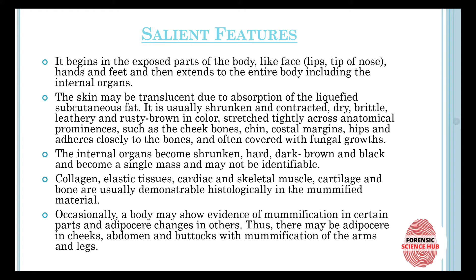Mummification begins in the exposed parts of the body, including the face, lips, tip of the nose, hands, and feet, then extends to the entire body including internal organs. The skin may be translucent due to absorption of liquefied subcutaneous fat. It is usually shrunken and contracted, dry, brittle, leathery, and rusty brown in colour, stretched tightly across anatomical prominences such as cheekbones, chin, costal margin, and hips, adhering closely to the bones and often covered with fungal growth.